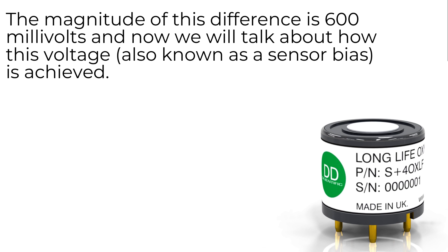The magnitude of this difference is 600 millivolts and we'll now talk about how this voltage, also known as the sensor bias, is achieved.